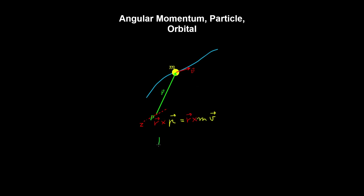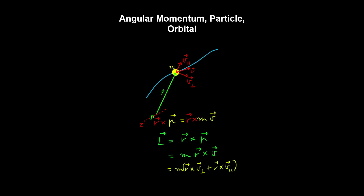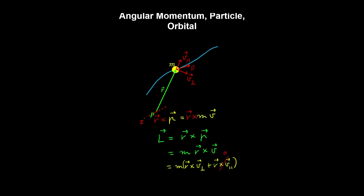...and we take the cross product on both sides, then we have a relationship between the angular momentum and the linear momentum of the particle, which can be written as follows, given the mass of the particle is constant. Now in two dimensions, we can observe that the perpendicular component of the velocity vector contributes to the angular momentum, and the parallel component does not contribute at all. So let's rewrite this expression using the distributive property of the cross product.